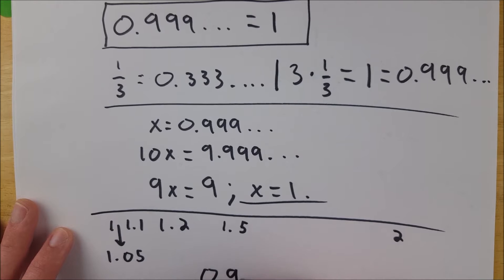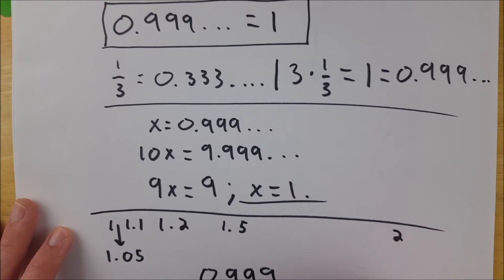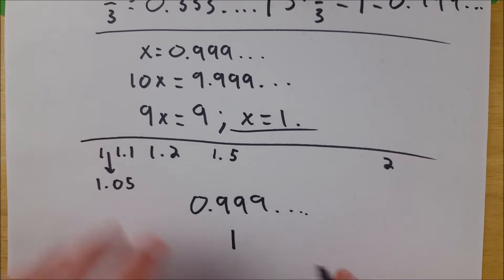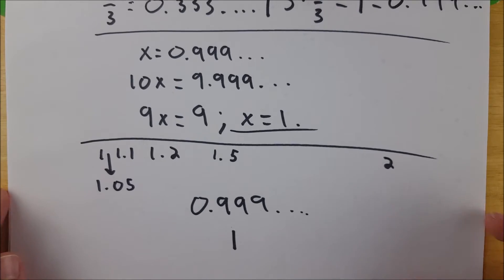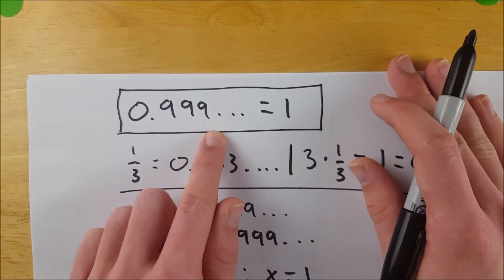But with 0.999 repeating forever and 1, what number is between these two numbers? Well, there is no number between these two numbers. And why is that? Well, that's why.